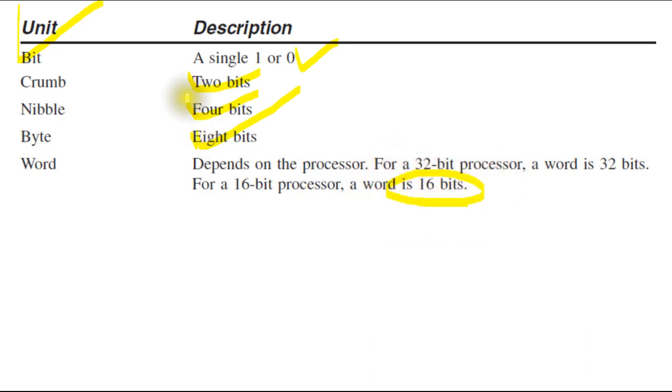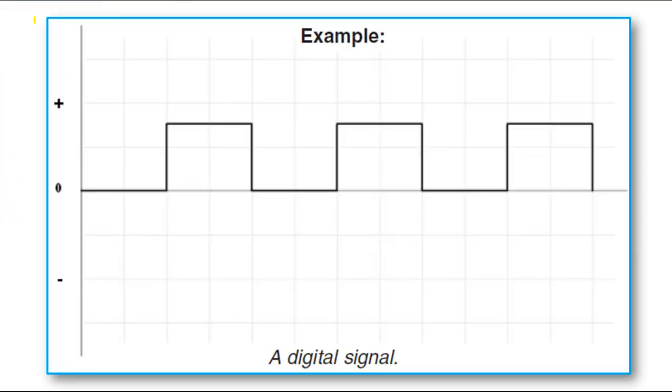Let me show you one example here. This is what I was talking about - an example of a digital signal. It will keep circulating like this. This portion is known as one, positive one, and this down is known as zero.